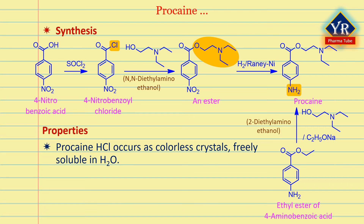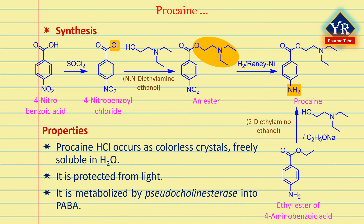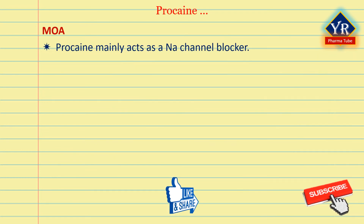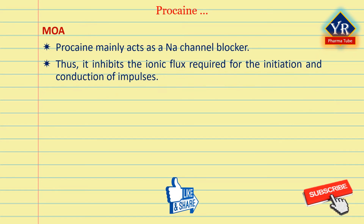Procaine hydrochloride occurs as colorless crystals or as a white crystalline powder, which is freely soluble in water. It is kept protected from light. It is metabolized in the plasma by the enzyme pseudocholinesterase through hydrolysis into PABA, which is then excreted by the kidneys into the urine. Procaine acts mainly as a sodium channel blocker, binding to and inhibiting voltage-gated sodium channels, thereby inhibiting the ionic flux required for the initiation and conduction of impulses.